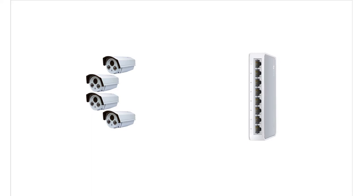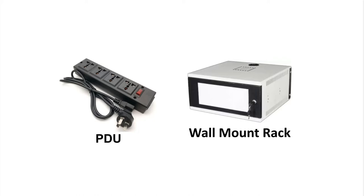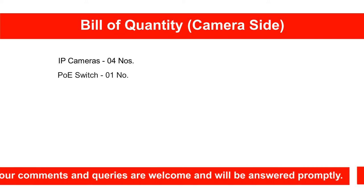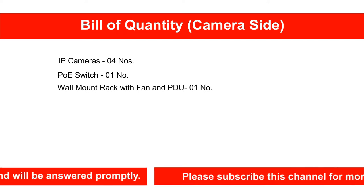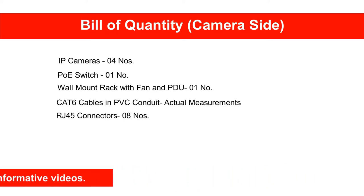First, we review the architecture at the camera location. Let's consider a 4 camera setup. All the cameras are connected to the PoE network switch with CAT6 cables as shown. A 100M level 2 PoE switch with Giga uplink port is the recommended specification for the switch. The switch will be placed inside a rack fitted with a fan for ventilation and a power distribution unit. The bill of quantity here is: IP cameras 4 numbers, PoE switch 1 number, rack 1 number, CAT6 cable with PVC conduit as per actual measurements, RJ45 connectors 8 numbers.